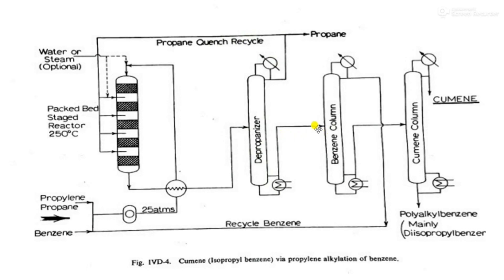From the bottom of the depropanizer, benzene, cumene, and polyalkylbenzene are obtained and sent to the benzene column. In the benzene column, benzene is separated from the top and recycled back to the feed. From the bottom, cumene and polyalkylbenzenes are sent to the cumene column, where cumene is obtained as the top product and polyalkylbenzenes are obtained as the bottom product.